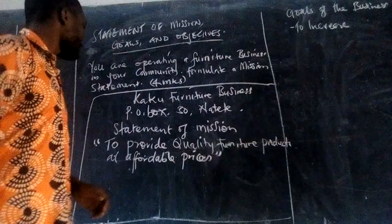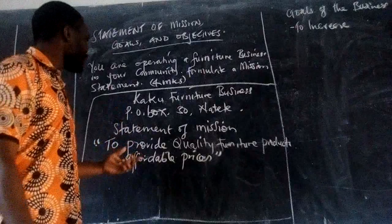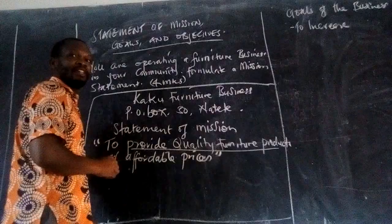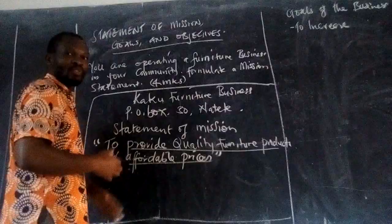We also said that the mission statement should show at least two things: the main reason for the existence of a business, and the strategy. So 'to provide quality furniture products' is the purpose of the business, and 'at affordable prices' is the strategy.